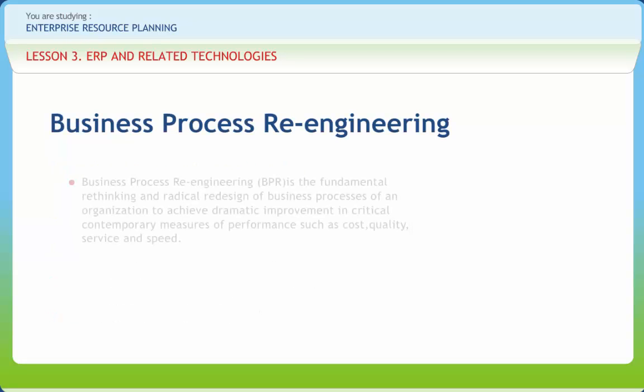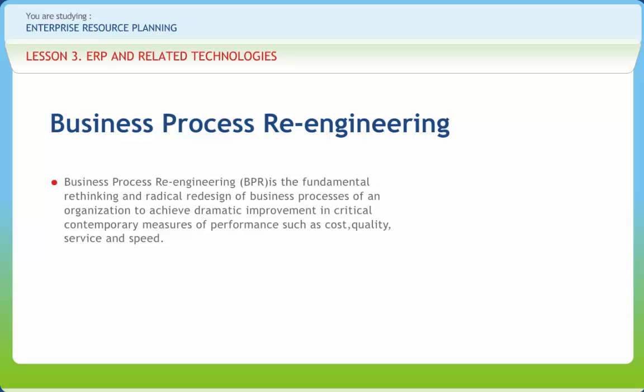Business process re-engineering, BPR, is the fundamental rethinking and radical redesign of business processes of an organization to achieve dramatic improvement in critical contemporary measures of performance such as cost, quality, service and speed. In simple terms, the process of examining current processes and redesigning those processes to increase the efficiency and effectiveness of an organization is called BPR.